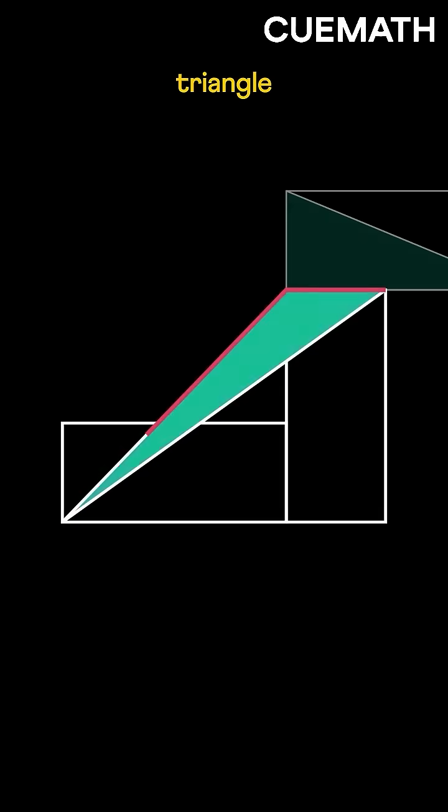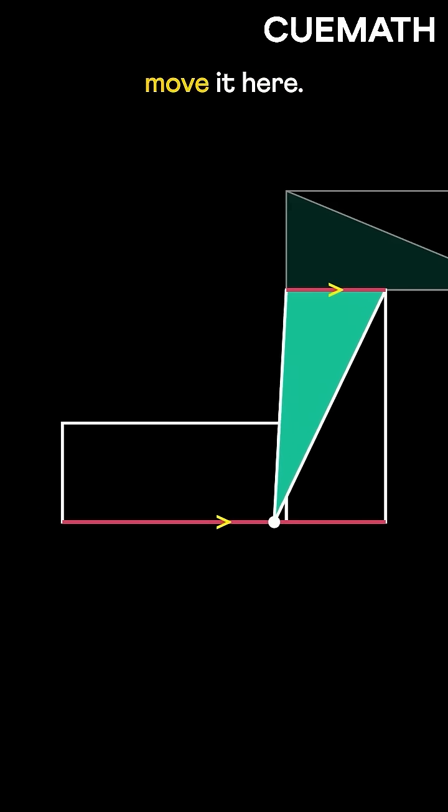The remaining area forms another triangle with this length as its base, placed between these two parallel lines. Since shifting this point doesn't change the area, let's move it here.